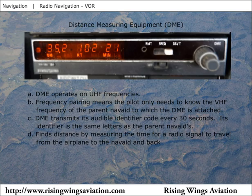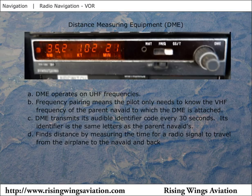Before using DME, identify the DME to be used by listening for its Morse code identifier. DME equipment does not have its own unique identifier; instead, it uses the identifier of the VOR to which it is attached. The DME will transmit its parent VOR's Morse code identifier once every 30 seconds. DME operates by measuring the time it takes for a radio signal to be relayed from the airplane to the ground-based DME equipment and back. The result is displayed in nautical miles to the pilot.